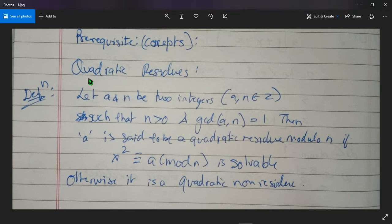What is it? Let's see. Quadratic residue: for any two numbers a and n such that a and n are integers - that is, a comma n belong to set of integers Z - such that n is greater than 0 and GCD (the greatest common divisor) of a and n is equal to 1. Then if these two conditions are satisfied, we can say that a is said to be a quadratic residue modulo n if x squared is congruent to a mod n is solvable. Otherwise it is quadratic non-residue.